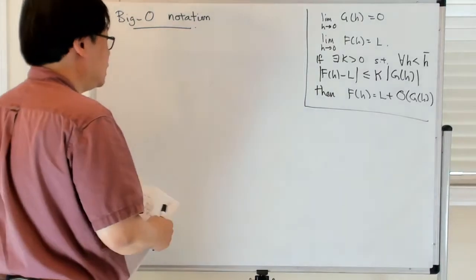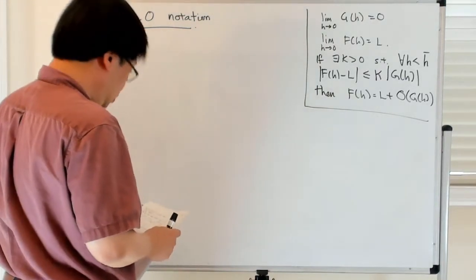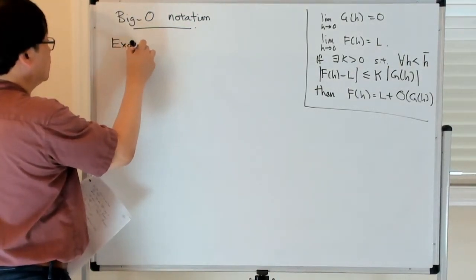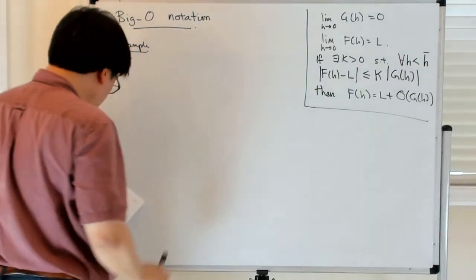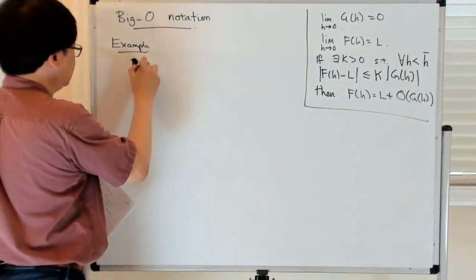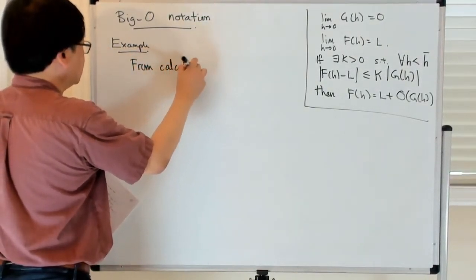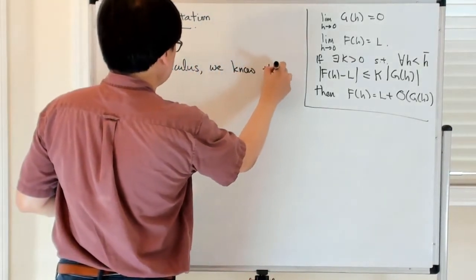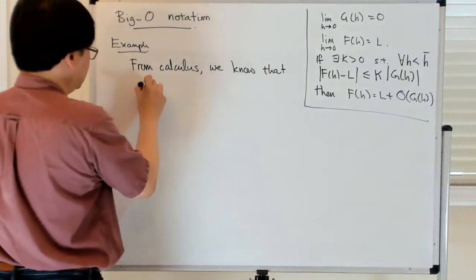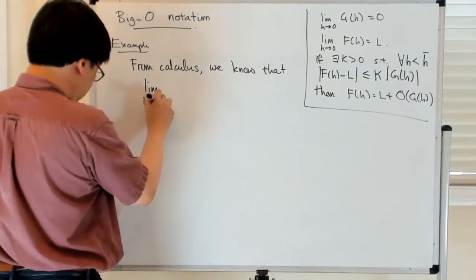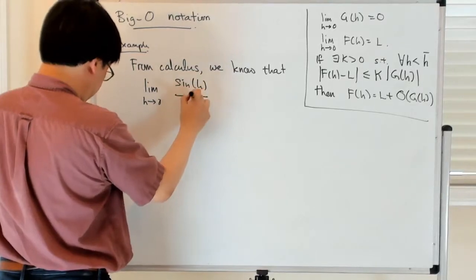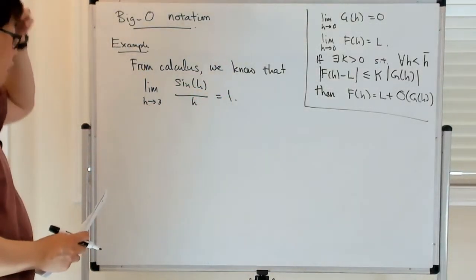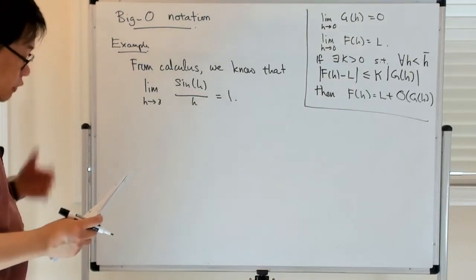So let's look at applying this idea of the big O notation to an example. From calculus, we know that the limit as h goes to 0 of sine of h over h is 1, and you can ask how fast does sine of h over h converge to 1?